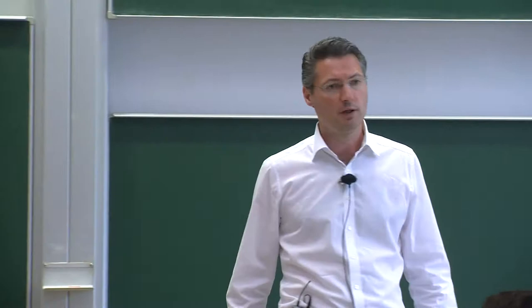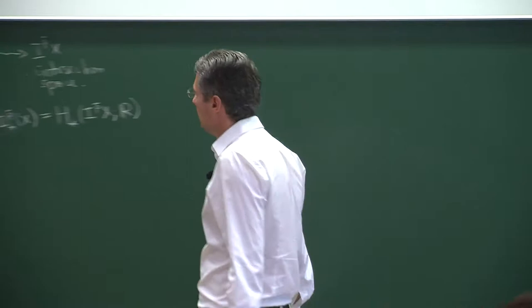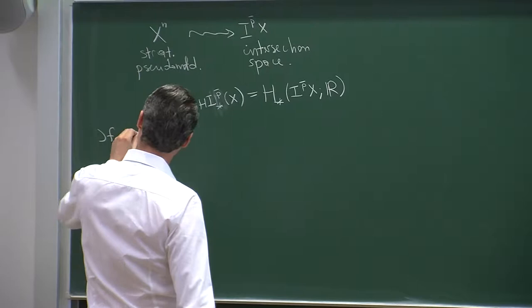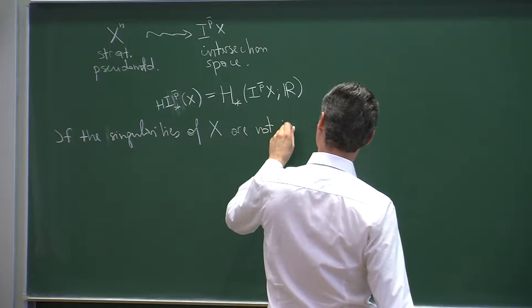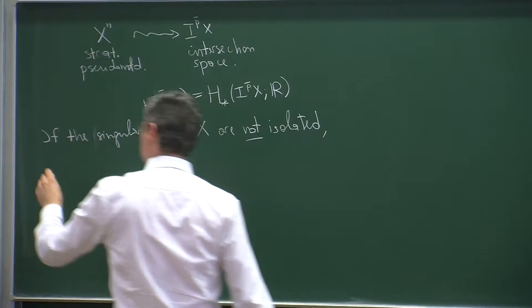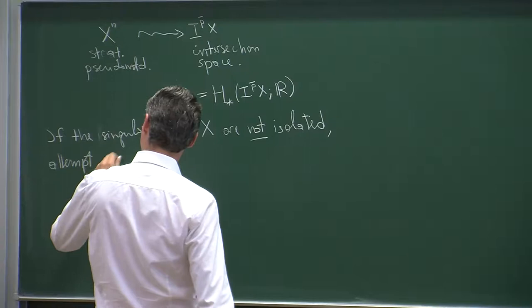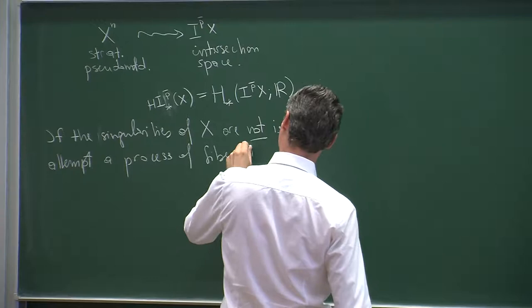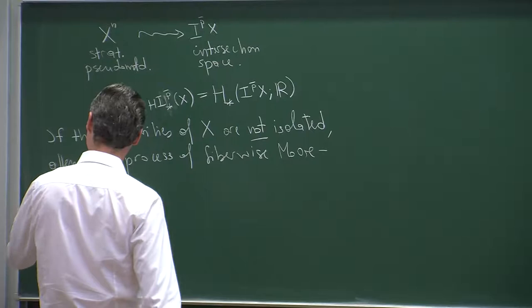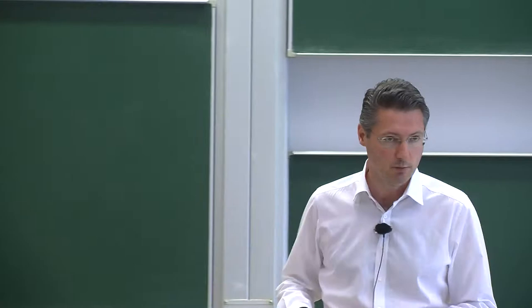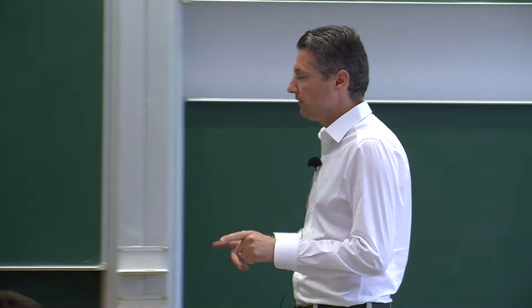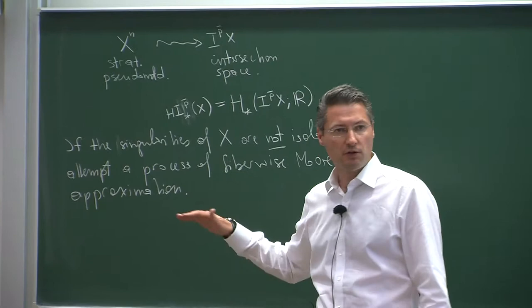I showed you last time how one can construct these spaces for a space with isolated singularities. If the singularities of X are not isolated, one attempts the process of fiber-wise Moore approximation. At this point, things get very interesting, because there is no longer a close parallel with the development of intersection homology. Either such a fiber-wise Moore approximation is possible or it is not — in general, it is obstructed.